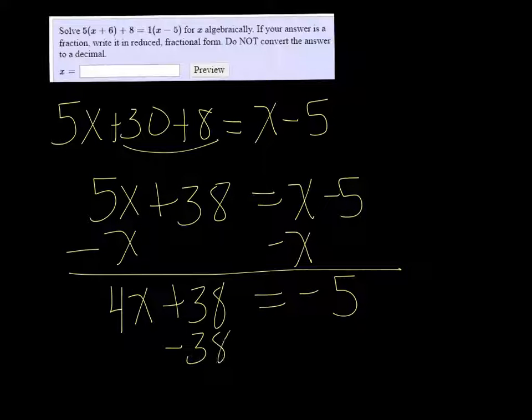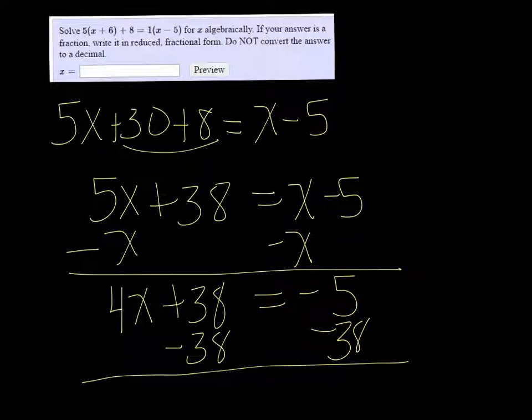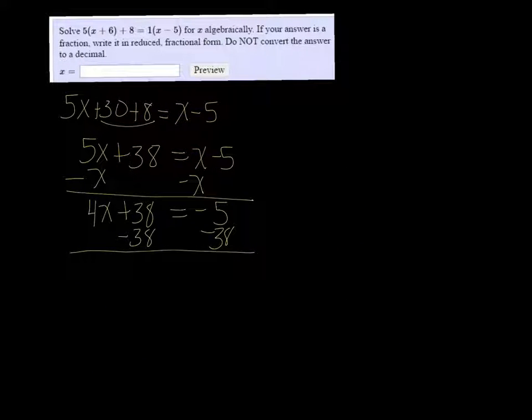Subtract the 38 on both sides so that x is isolated, and I get 4x = -43.